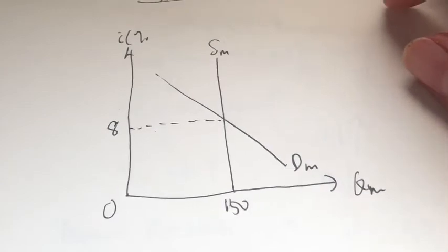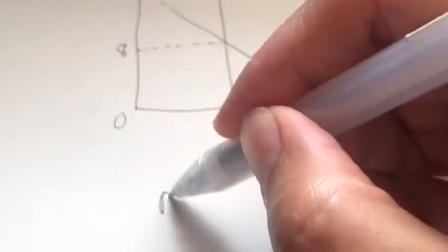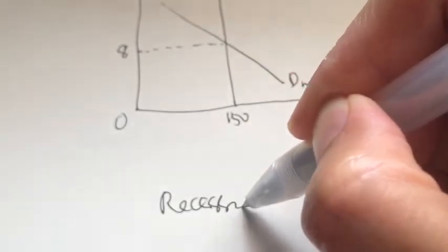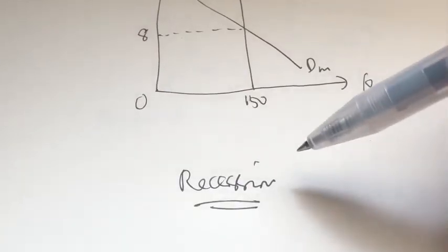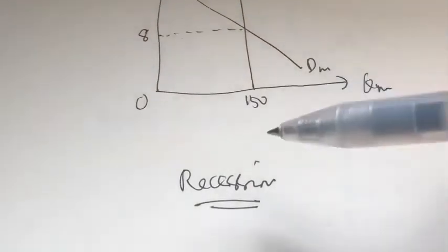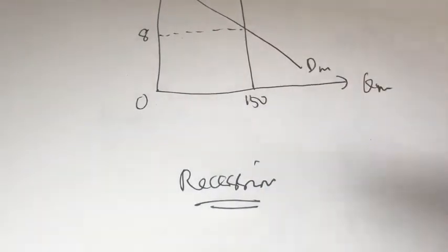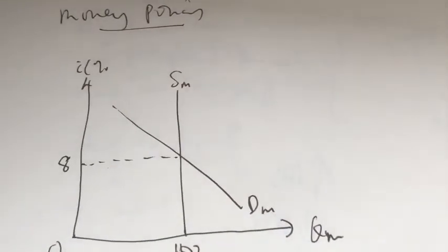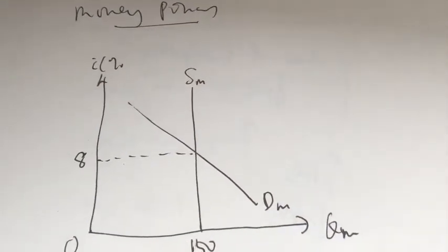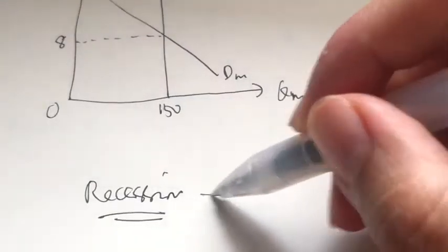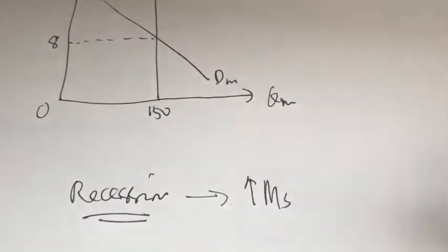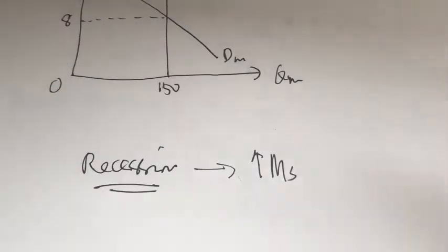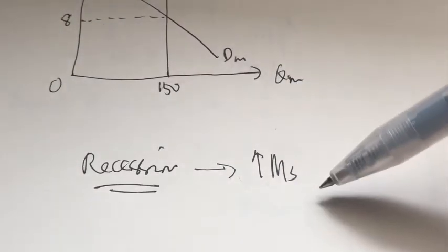Now let's say we have a recession problem. You know what happens in recession: there's a fall in output, fall in income, fall in trade — basically a slump in the economy. The government wants to revive the economy and make it grow again. So the government can increase the money supply by either buying securities through the open market, reducing the reserve ratio, or reducing the discount rate. This is called the easy money policy or the expansionary monetary policy.